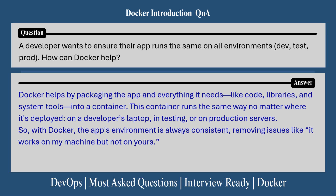First interview question: a developer wants to ensure their app runs the same way on all environments — dev, test, prod. How can Docker help? Here's how you can answer: Docker helps by packaging the app and everything it needs, like code, libraries, and system tools, into a container. This container runs the same way no matter where it's deployed — on a developer's laptop, in testing, or in production servers. With Docker, the app's environment is always consistent, removing issues like 'it works on my machine but not on yours.'